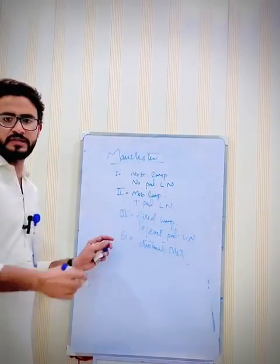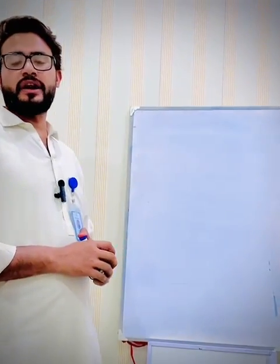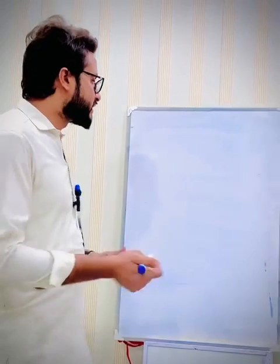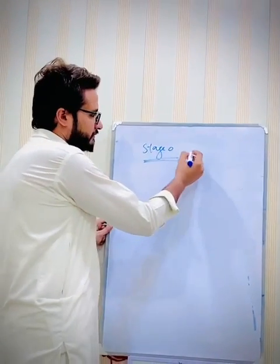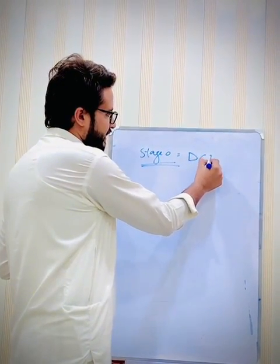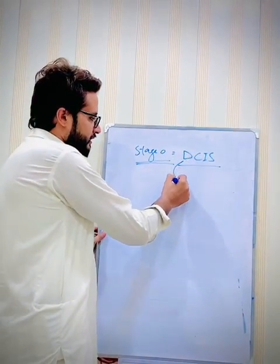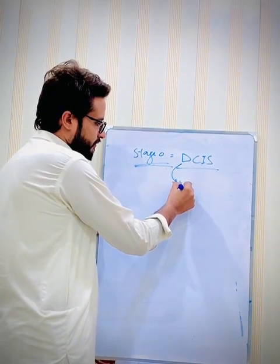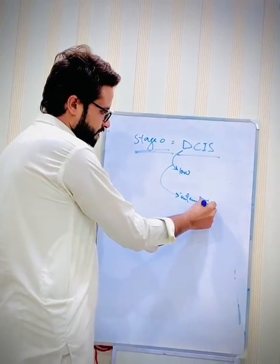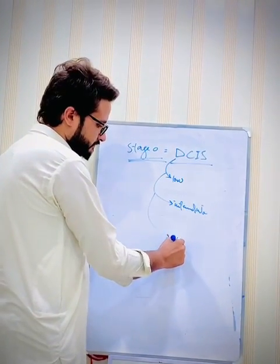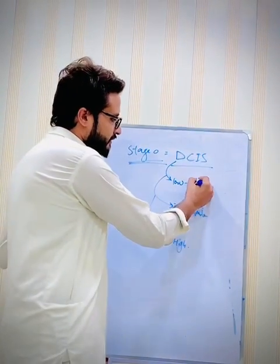This is the Manchester staging system for breast cancer. Now coming toward treatment options — there are different treatment options depending on the stage of the disease. If breast cancer is in stage zero, for example if the disease is DCIS — ductal carcinoma in situ — there are three grades: low, intermediate, and high.